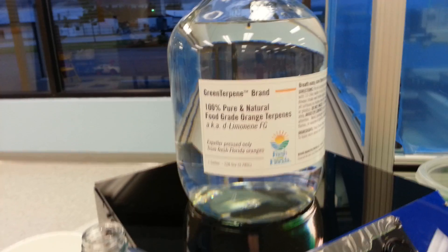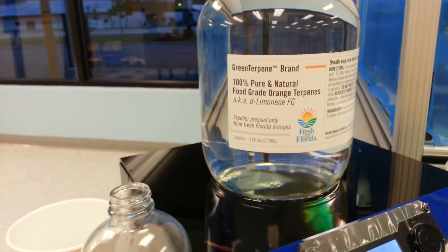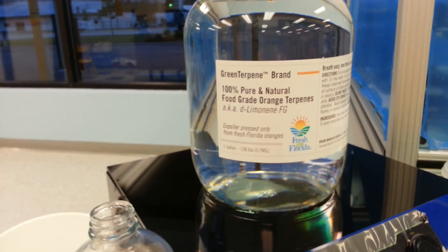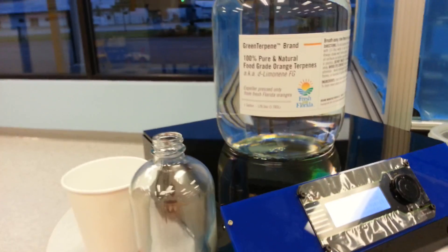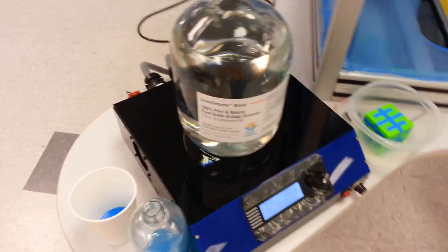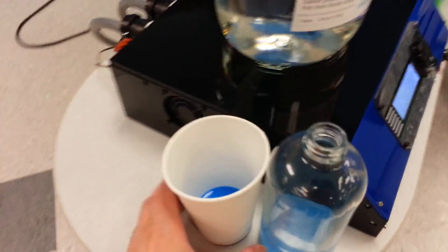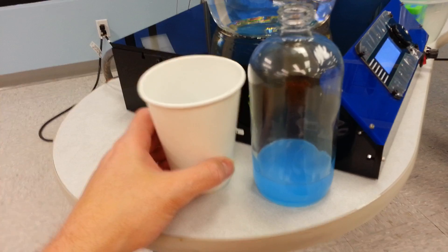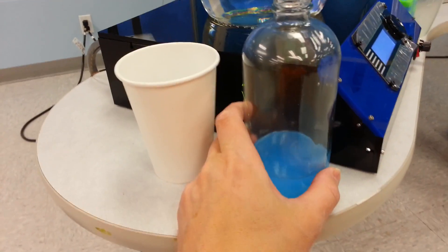This is basically the byproduct after you dissolve. This is the d-limonene, and this is a cup that I dissolved some HIPS in. As you can see, the HIPS went to the bottom of the cup and I was able to salvage the d-limonene.